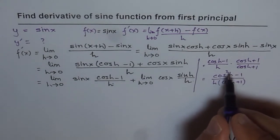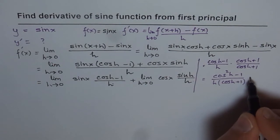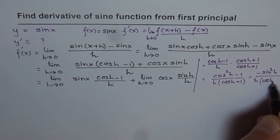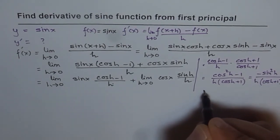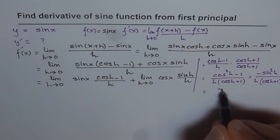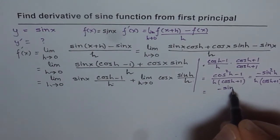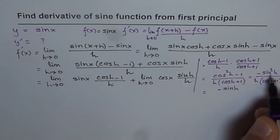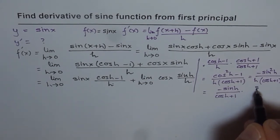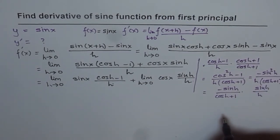Now what is cos square h minus 1? It is minus sine square h. So this could be written as minus sine square h over h times cos h plus 1. And this I can rearrange. Like, I want to write this as minus sine h over cos h plus 1 times sin h over h.